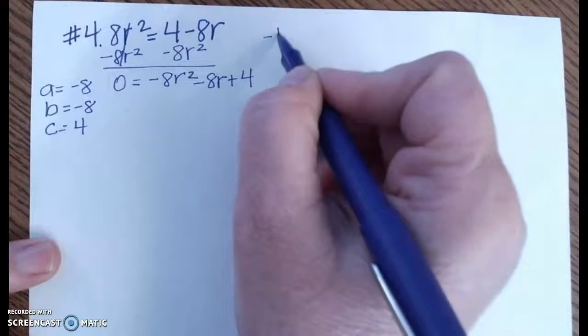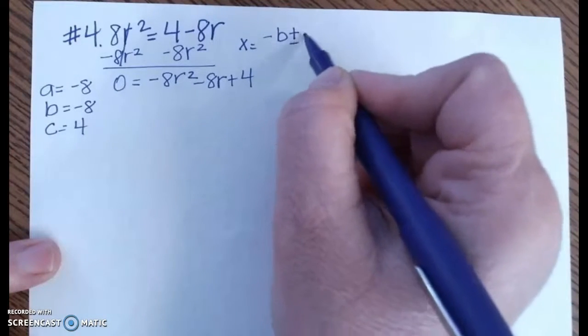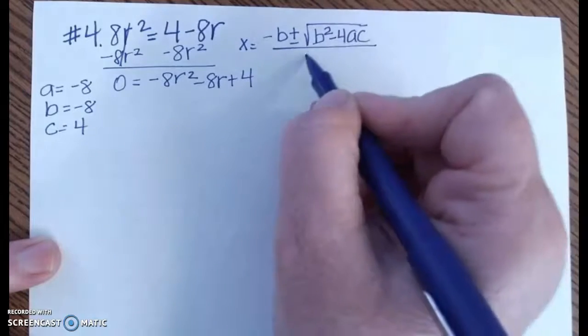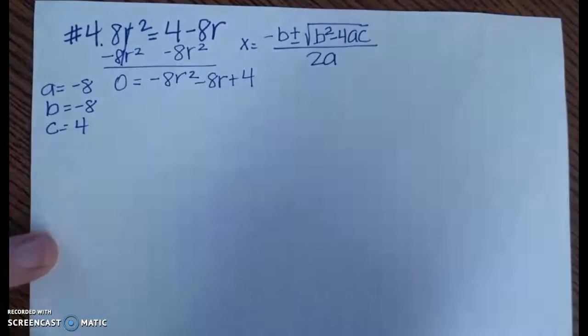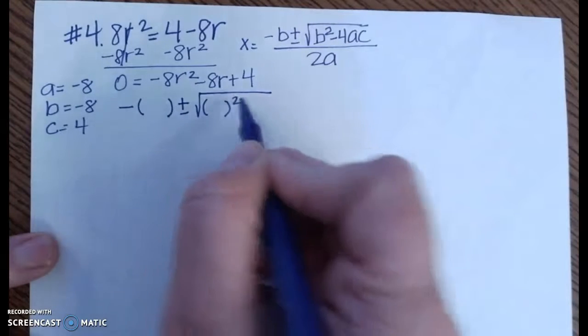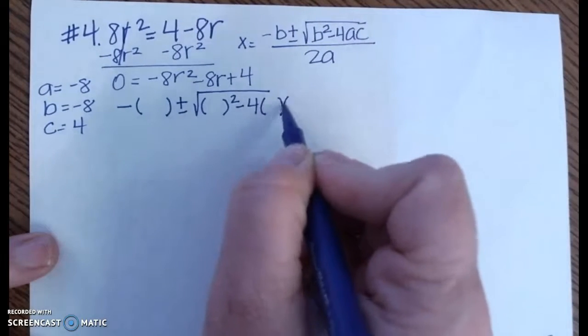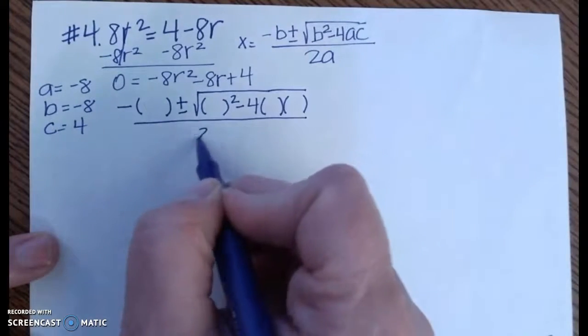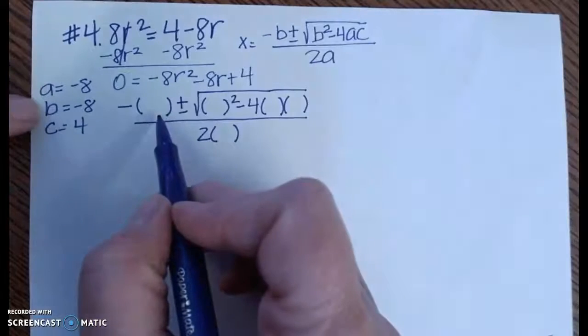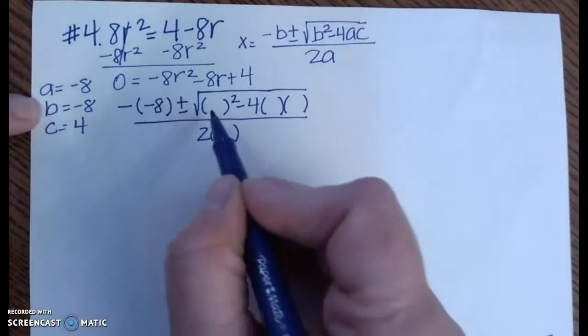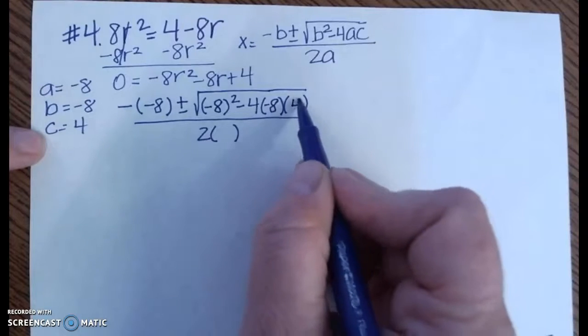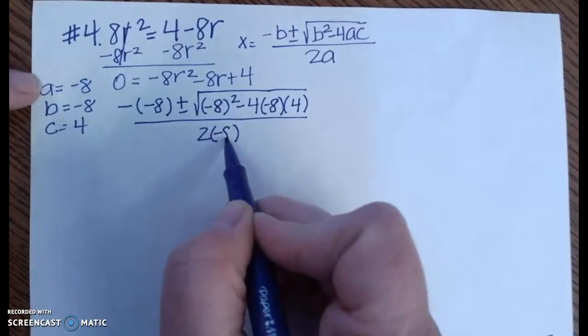Once we've got that, we're going to plug this into our quadratic formula. So we've got x = -b ± √(b² - 4ac) all divided by 2a. So I'm going to set it up: negative b plus or minus the square root of b squared minus 4 times a times c, all divided by 2 times a. I'm going to go back and plug in the numbers that belong. So this is supposed to be a b here, and b is negative 8. b also goes here. This is an a value, which is negative 8. This is c, which is 4. And this is a, which is negative 8.